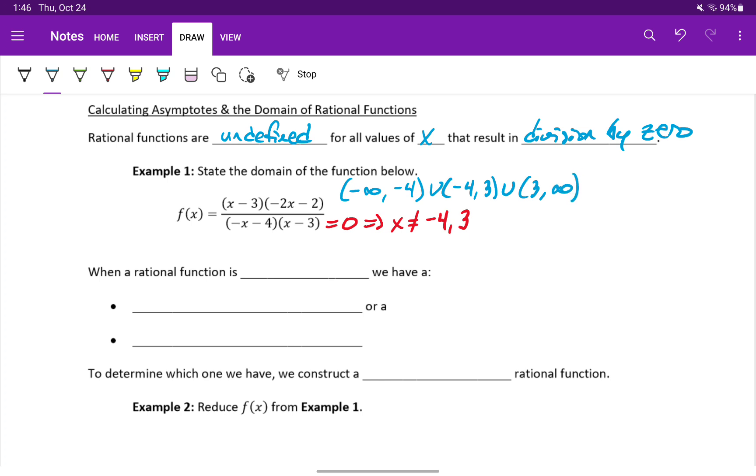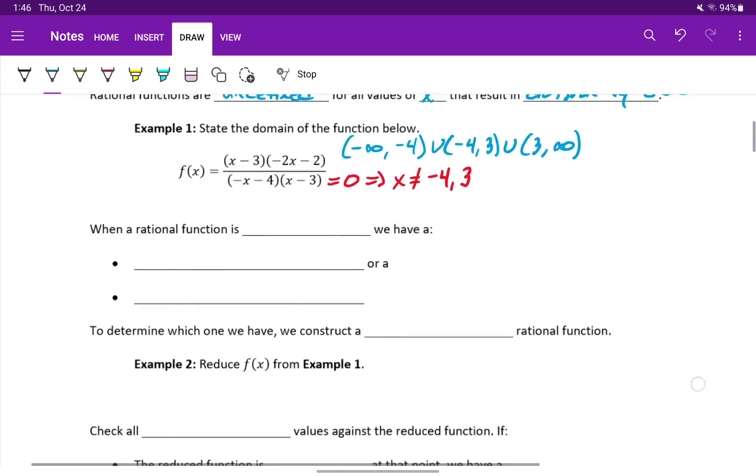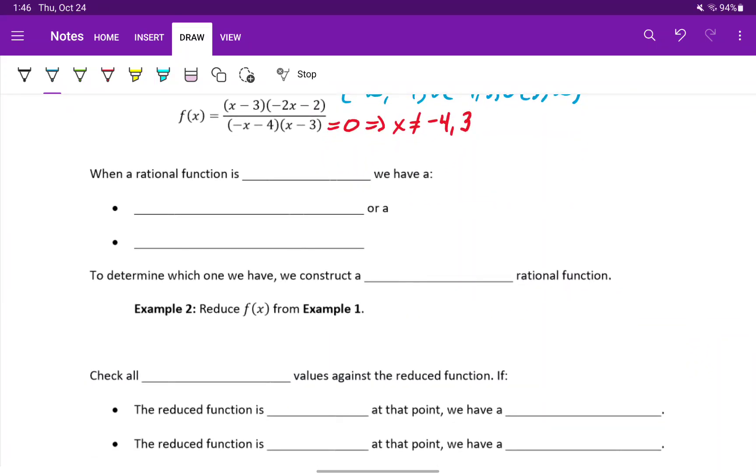So by setting the denominator equal to zero, we find those restricted values, and from there we can establish the domain of that rational function.